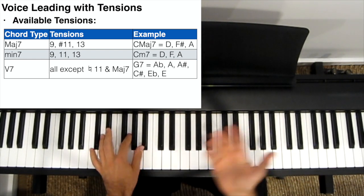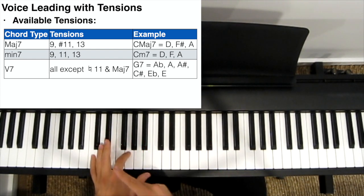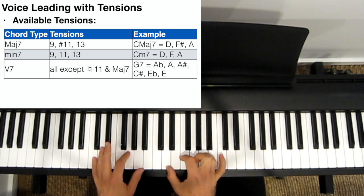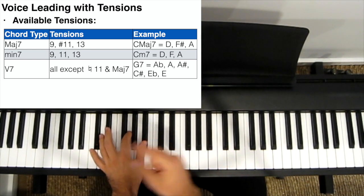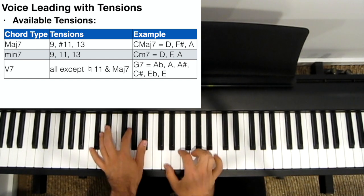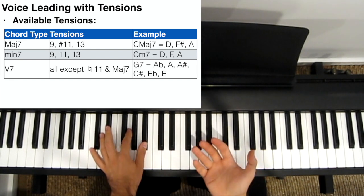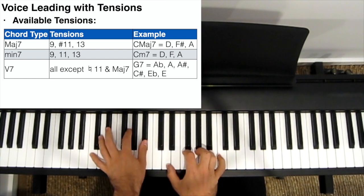For a minor seven chord, same idea. Take a C minor seven — the triad is C minor, and the triad a whole step above is D minor. So we can use a D minor triad over a C minor seven chord, giving us the notes D, F, A, which is the 9th, 11th, and 13th — the available tensions you can use over a minor seven chord.